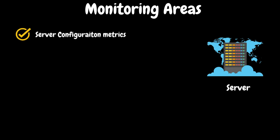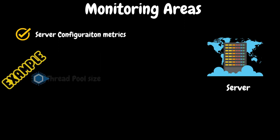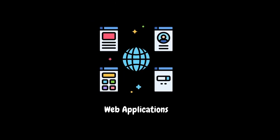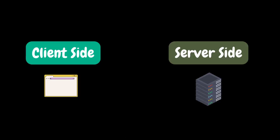Along with the server resource utilization metrics, we also monitor server configuration metrics using APM tools. For example, if the application is deployed in a three-tier architecture and is developed using Java technology, then we will monitor thread pool size, heap memory usage, JDBC connection pool size, etc. When conducting performance testing for web applications, we can classify the metrics in two different ways: client side metrics and server side metrics.